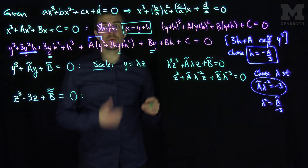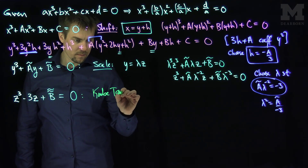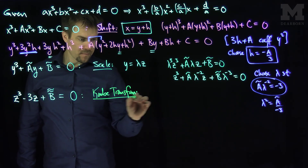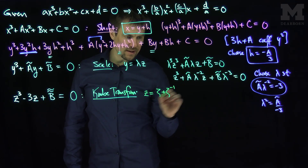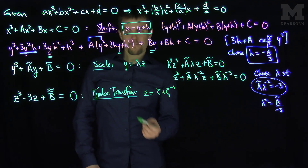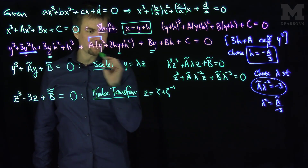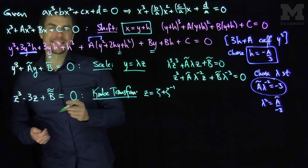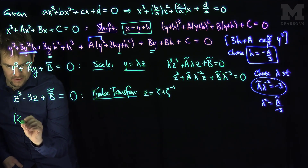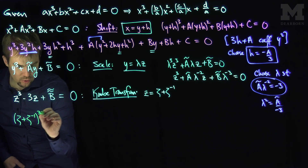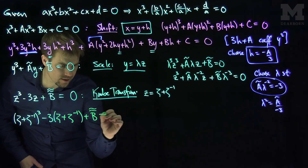My final step is to use a transformation called the Cayley transformation. What I'm going to do is let z = ζ + ζ⁻¹. If I can find ζ, I can find z; if I can find z, I can find y; and if I can find y, I can find x. So let's apply this transformation and see what happens. We're going to have (ζ + ζ⁻¹)³ - 3(ζ + ζ⁻¹) + b̃̃ = 0.